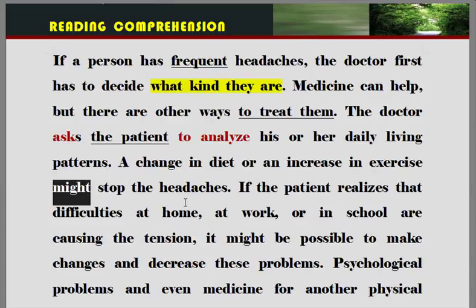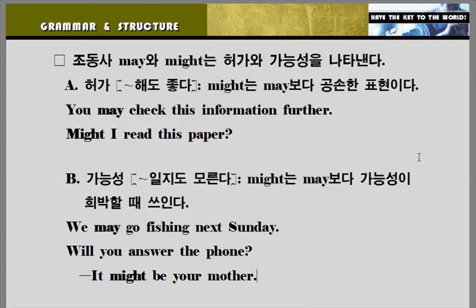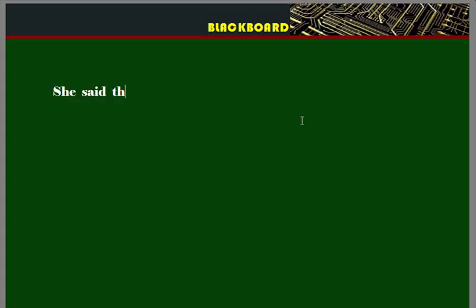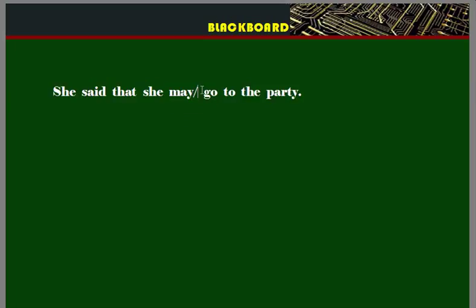식사의 변화 혹은 운동의 증가, 이러한 것들이 두통을 멈추게 할 수도 있다. 'Might' — 지금 상황은 현재인데 왜 'might'가 쓰였을까? 'might'는 'may'의 과거형인데 현재에서도 쓸 수 있습니다. 조동사 'may'와 'might'에 대해서 살펴보겠습니다. 'might'는 'may'보다 좀 더 공손한 표현이 됩니다. 그리고 'she said she may go to the party' — 여기서 시제가 맞지 않으므로 'might'로 써줘야 됩니다.